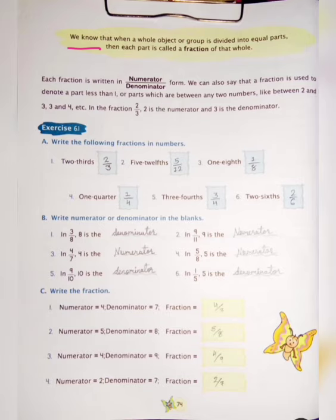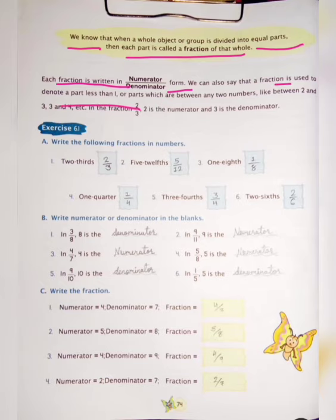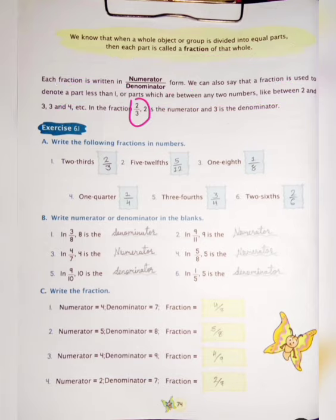We know that when a whole object or group is divided into equal parts, then each part is called a fraction of that whole. Each fraction is written in numerator and denominator form. We can also say that a fraction is used to denote a part less than one, or parts which are between any two numbers, like between 2 and 3, and 3 and 4, etc. In the fraction 2 upon 3, so 2 is the numerator and 3 is the denominator.